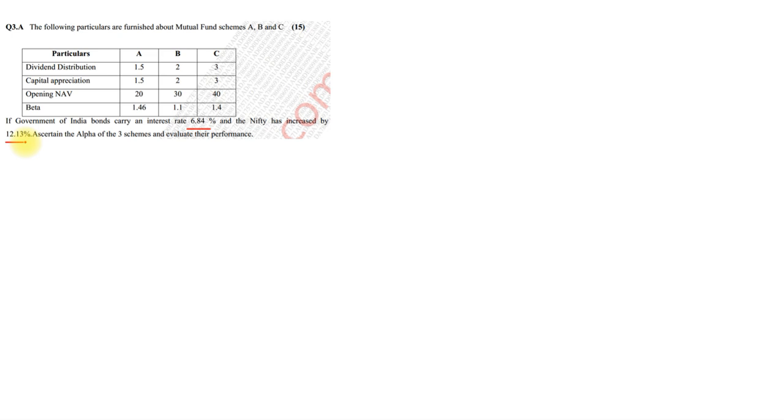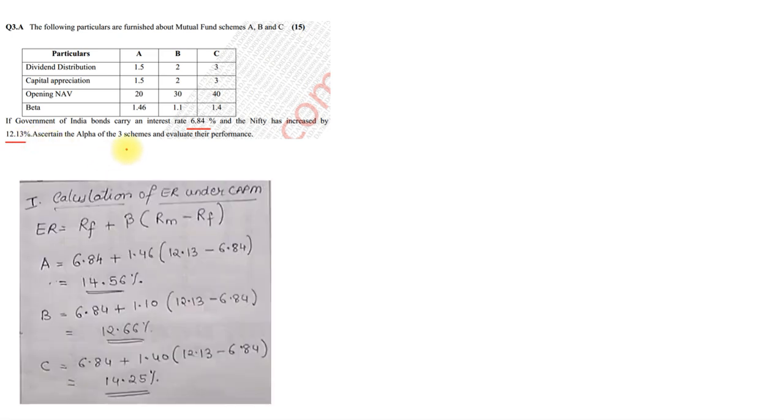Now, when such kind of question has been asked, let us see how to solve. The very first thing that you will need to solve is, you are finding the, first step will always be calculation of expected return under CAPM. Jensen alpha is under Jensen and Jensen is always associated with CAPM method.